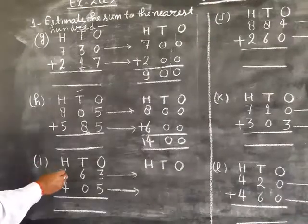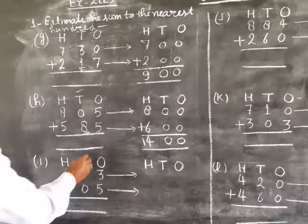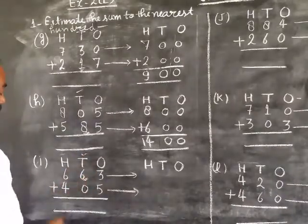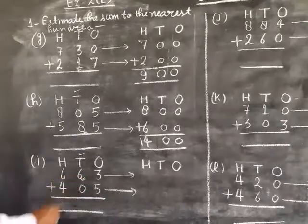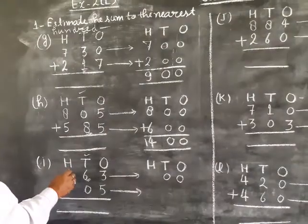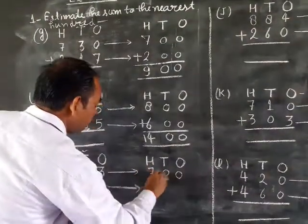We look at tens place digit. 8 plus 6, it's replaced by 0 and 1 plus the hundreds place digit, so 6 plus 1 equals 7. Answer is 1400.